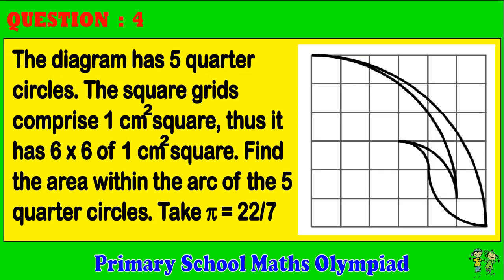Question 4. The diagram has five quarter circles. The square grids comprise 1 cm² squares, giving a 6 by 6 grid of 1 cm² squares. Find the area within the arc of the five quarter circles. Take pi equals 22 over 7.